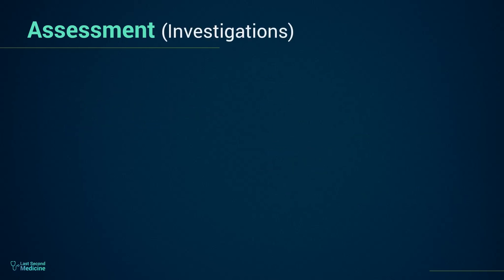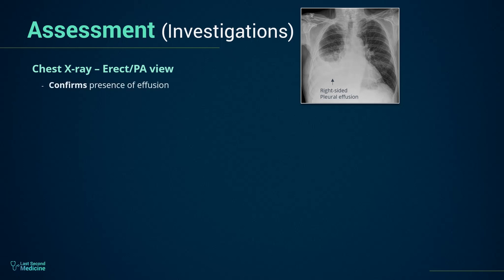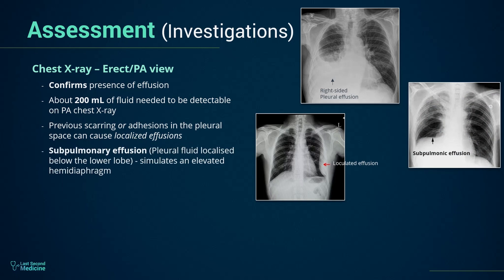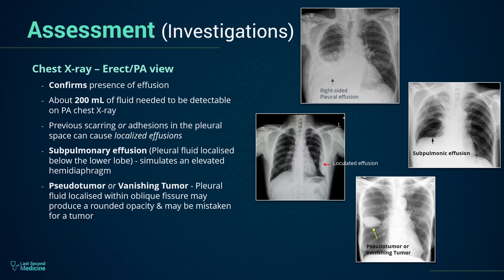How to investigate pleural effusions? First, the radiological investigations. An erect chest X-ray, posteroanterior view, will confirm the pleural effusion. The classical appearance on the erect PA chest film is of a curved shadow at the lung base, blunting the costophrenic angle, and the meniscus ascending towards the axilla. Around 200 millilitres of fluid is required for it to be detectable on a PA chest X-ray. Previous scarring or adhesions can cause localized effusions. Sub-pulmonary effusion, which is fluid localized below the lower lobe, simulates an elevated hemi-diaphragm. Pleural fluid localized within an oblique fissure may produce a rounded opacity that may be mistaken for a tumor — this is called a pulmonary pseudotumor or vanishing tumor.